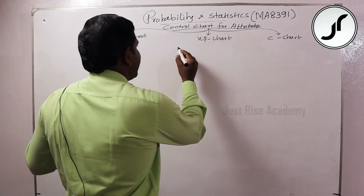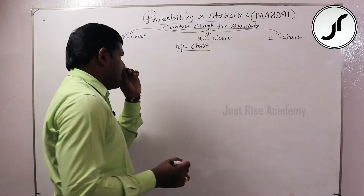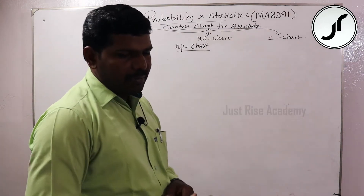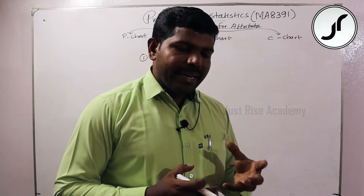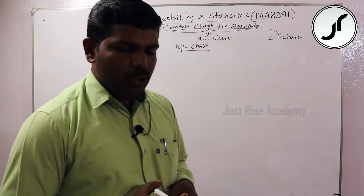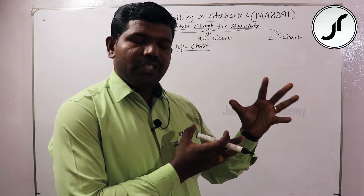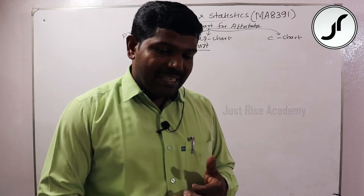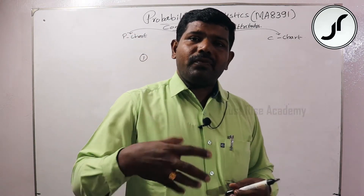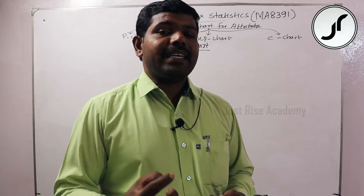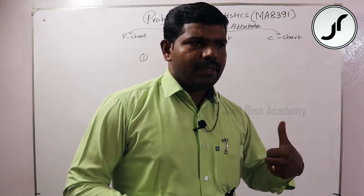Next we are going to the problem based on NP chart. Using the following data, construct the NP chart and comment on the state of control. Assume that 200 items are inspected each day. So in 15 days, every day there are 200 items inspected in a factory or company.